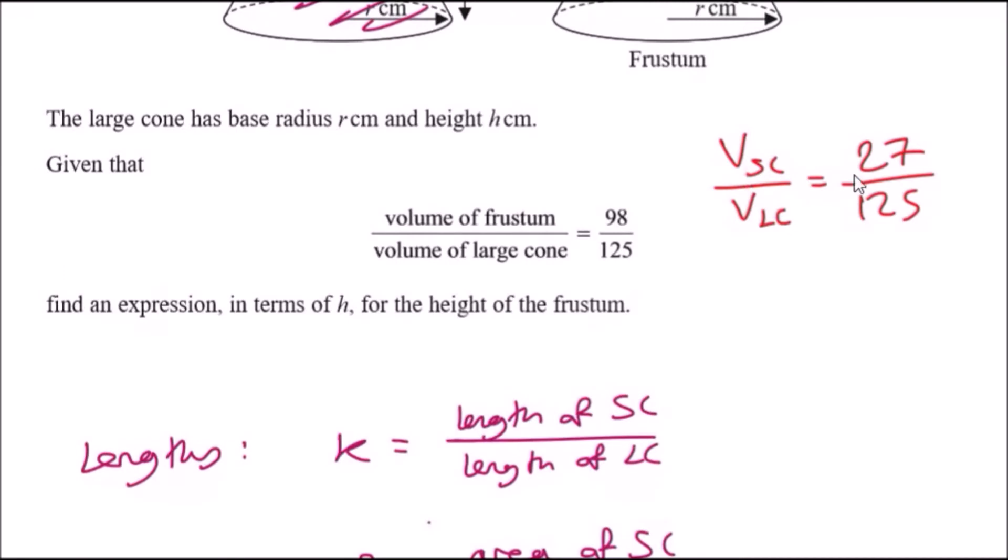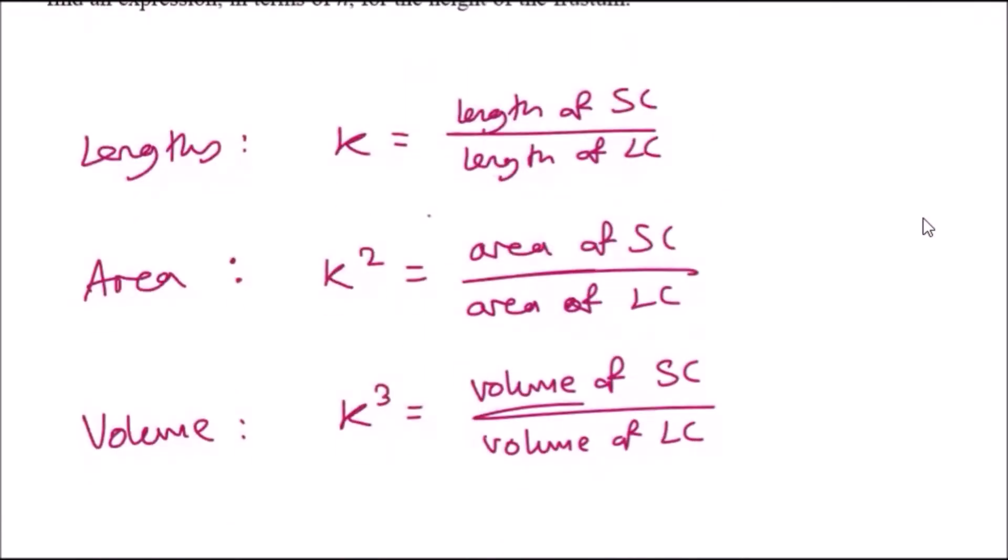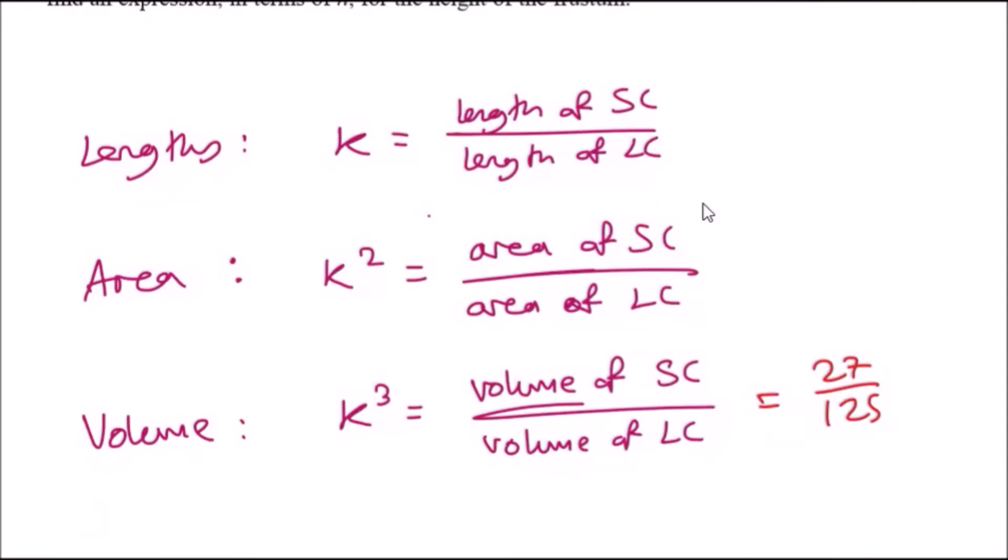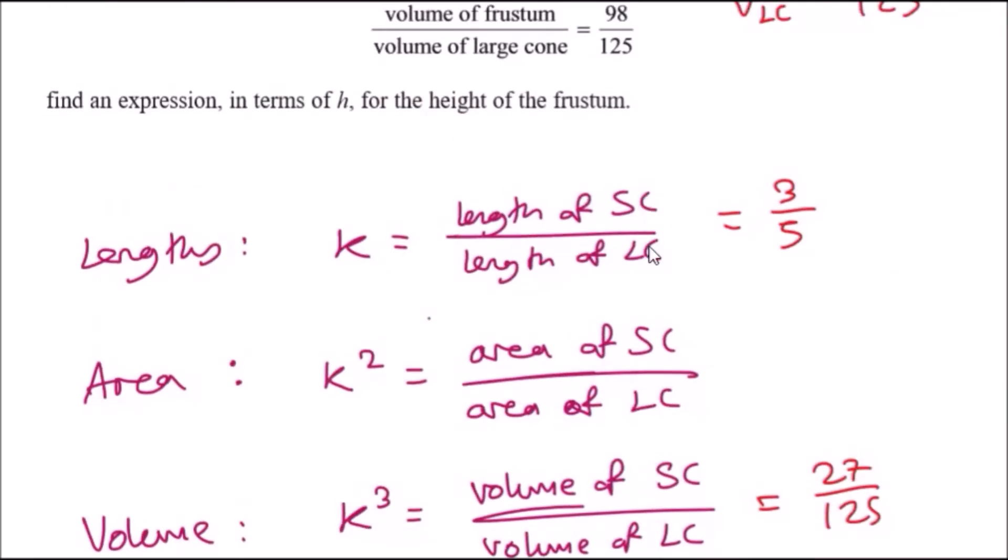We're looking at the relationship between the volume of the small and large cone, which is 27 over 125 equals k³. To find the lengths (and we want the lengths because height is a length), we can cube root this, which gives us 3/5. So the relation between the small cone to the large cone has a height of 3 to 5 parts.